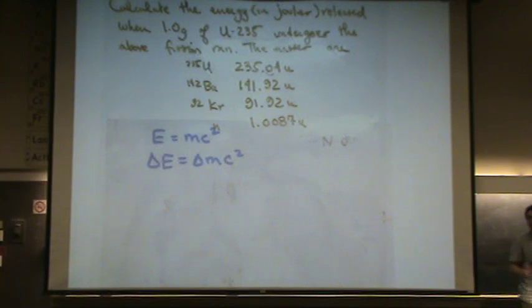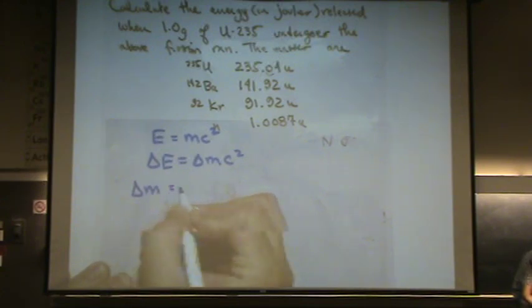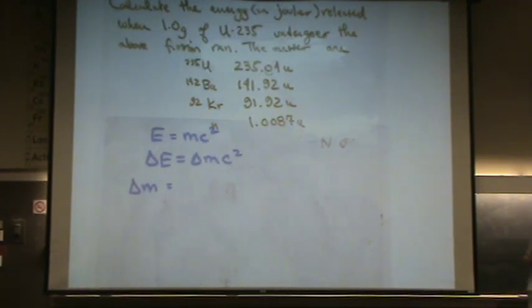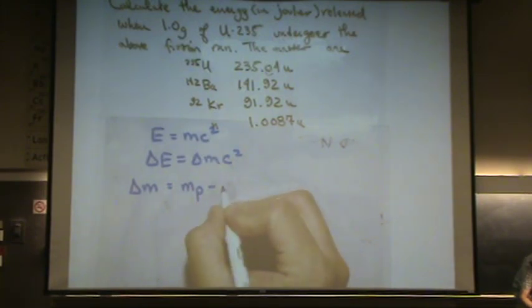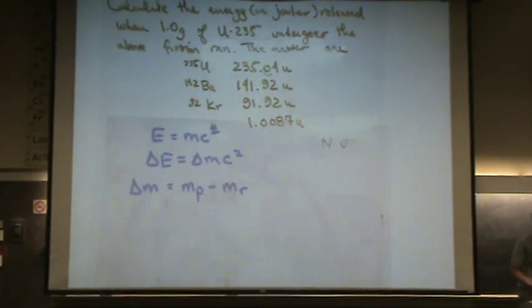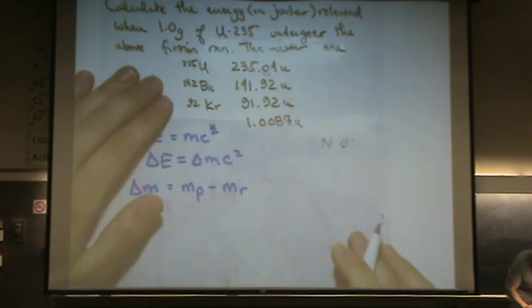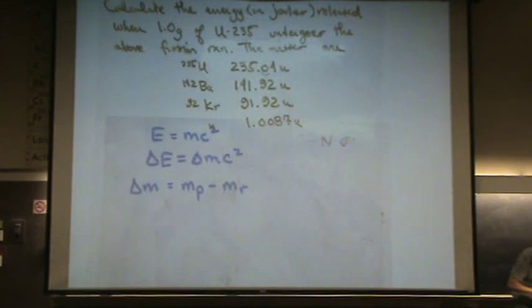So what I encourage you to do, start off with the change in mass. And that's going to be the change in mass. What you're going to do is take the product mass and subtract the reactant mass. So you're going to calculate the mass of the products, subtract that, subtract the mass of the reactants. Okay, let's do these one at a time.